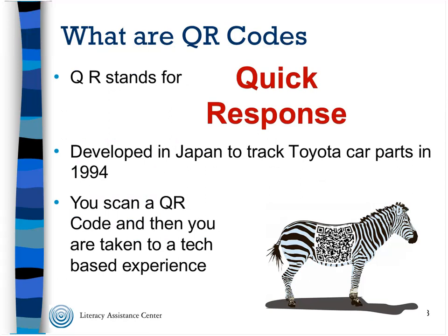QR codes have become much more used in our society because of the widespread use of smartphones and other devices that have apps — which is a required aspect of how we use them. You also need a device with a camera, which the app uses to look at the QR code, and access to the Internet so you can go where the QR code tells you to go.